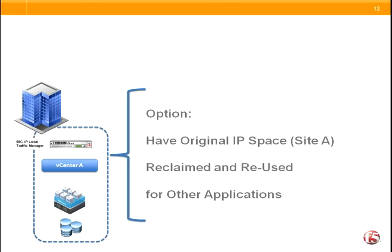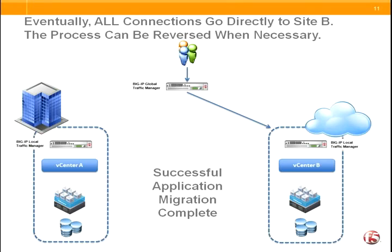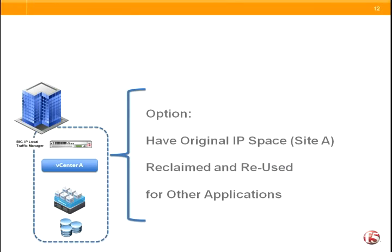At this point it's essentially done. The application has been moved, its storage has been moved, and we can register the virtual machine and that host with the vCenter in site 2 so that all management, all storage, and all compute resources are now in the cloud in site 2. Optionally, if this is a one-way migration, you can reclaim those IPs to be used for other applications or other uses in site 1.